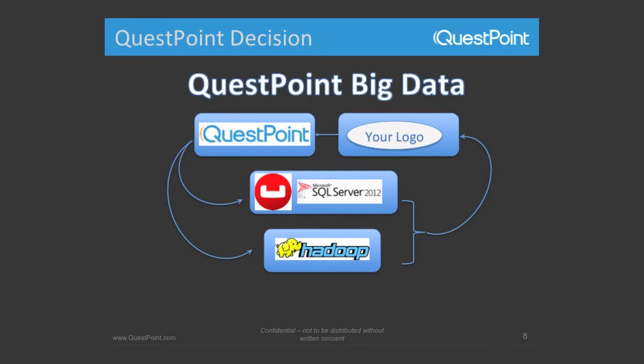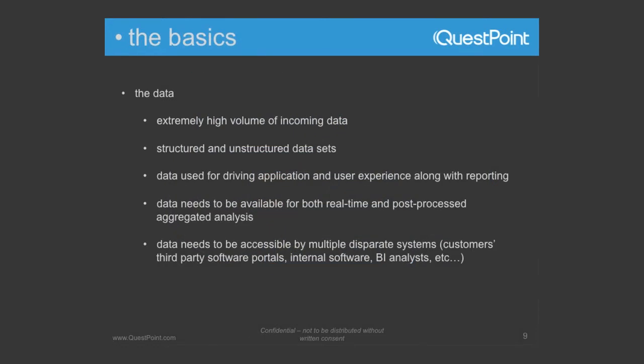This is kind of our ecosystem with big data. We still use Microsoft SQL Server, and we'll get into this in the design. We use Couchbase for high throughput and reliability, and Hadoop for post-processing aggregates. Some basics on the data: we have an extremely high volume of incoming data — structured and unstructured — and anyone who's ever worked with relational databases knows unstructured data just doesn't fit. The data is used to both drive the application user experience and for reporting. BI analysts and the financial folks always want that data real-time, so it has to be available for real-time use and also for post-processing to make better decisions later on.